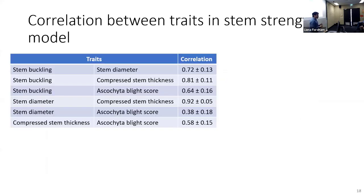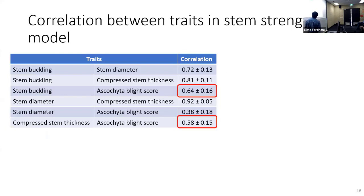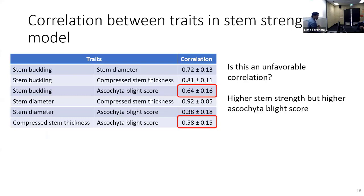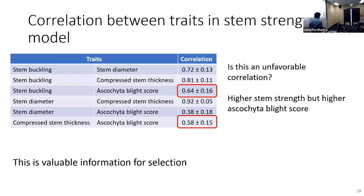These multivariate models gave me a better understanding of correlations between traits. In the stem strength and disease model with four traits and six correlations to estimate, I want to focus on the correlation between stem buckling and compressive thickness with disease, which is fairly significant. This means we're in the presence of an unfavorable correlation — as I select for higher stem strength, I could lead the population toward higher disease levels. Now that I know this, I need to address this situation when I construct my selection index.